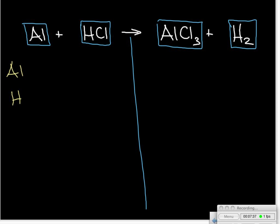After drawing our vertical line, we list out our elements: aluminum, hydrogen, and chlorine. We look at how many places each shows up: aluminum appears twice, hydrogen appears twice, chlorine appears twice. Since none show up fewer places than the others, we'll start with aluminum. Right now we're showing one aluminum atom on the reactant side and one in the aluminum chloride on the product side — aluminum is balanced.